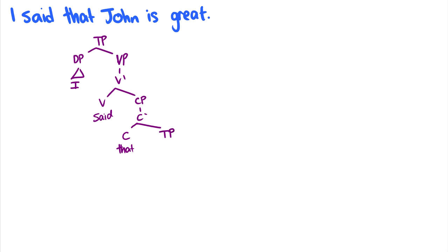And then we just have the same structure that we have at the top. So again, we just have another DP, we have a VP within it, V bar V, and then great is an adjective phrase. So that John is our DP, our verb is is, and then adjective phrase great. I said that John is great.